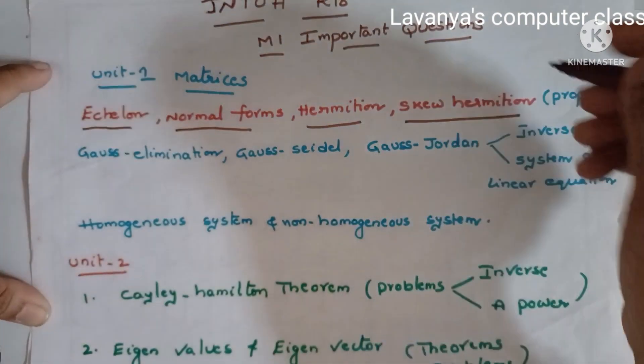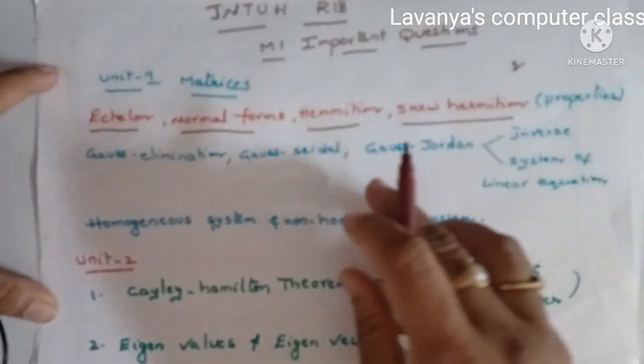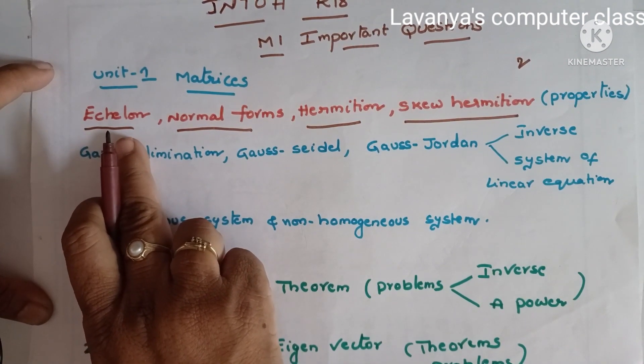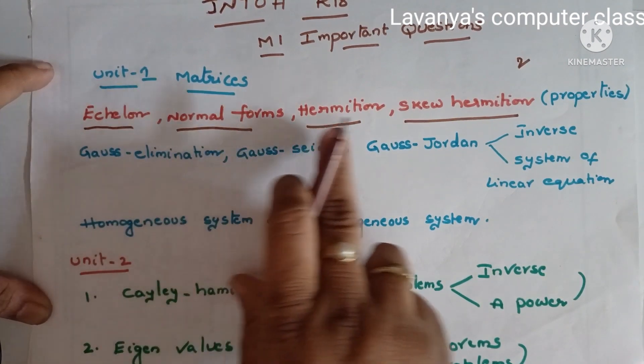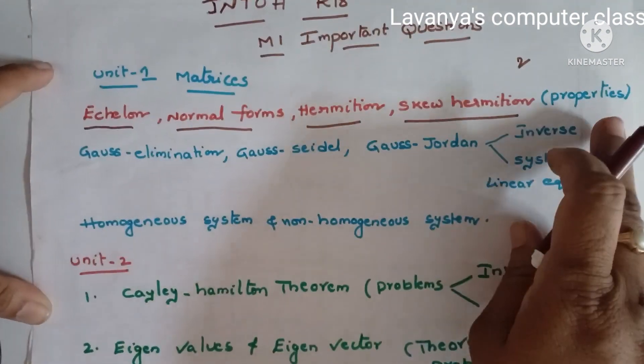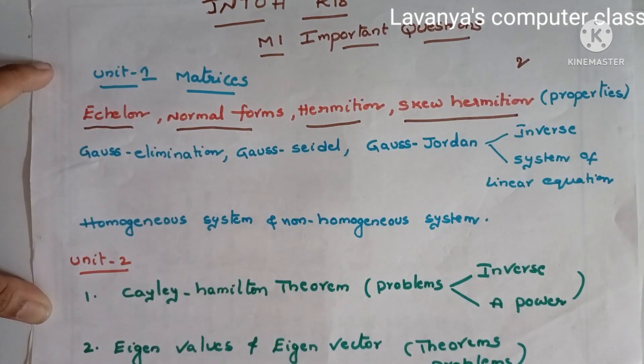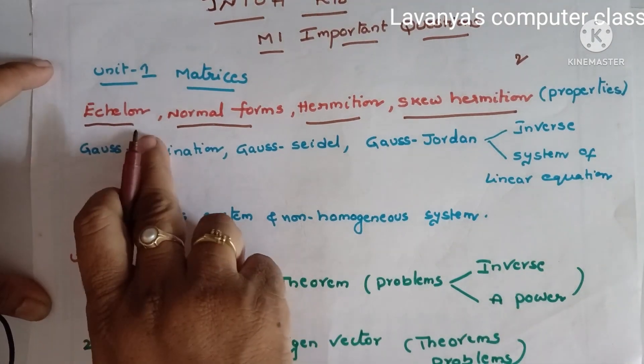At least two questions are coming from unit one. One question is compulsory coming from these topics. And also in echelon we have to find out rank problems.